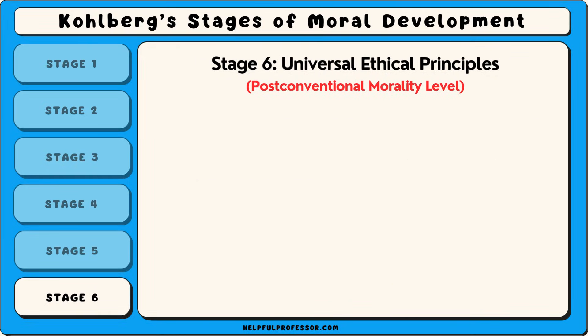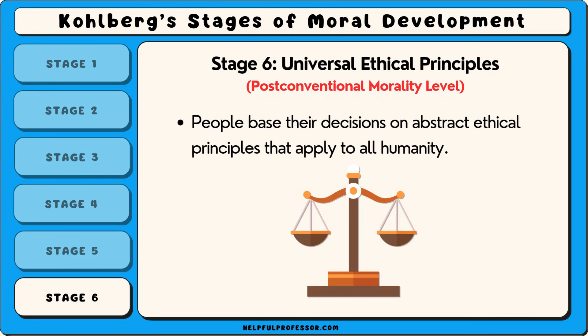The sixth stage is called universal ethical principles. At this higher stage of moral development, people base their decisions on abstract ethical principles that apply to all humanity, such as justice, equality and human rights.